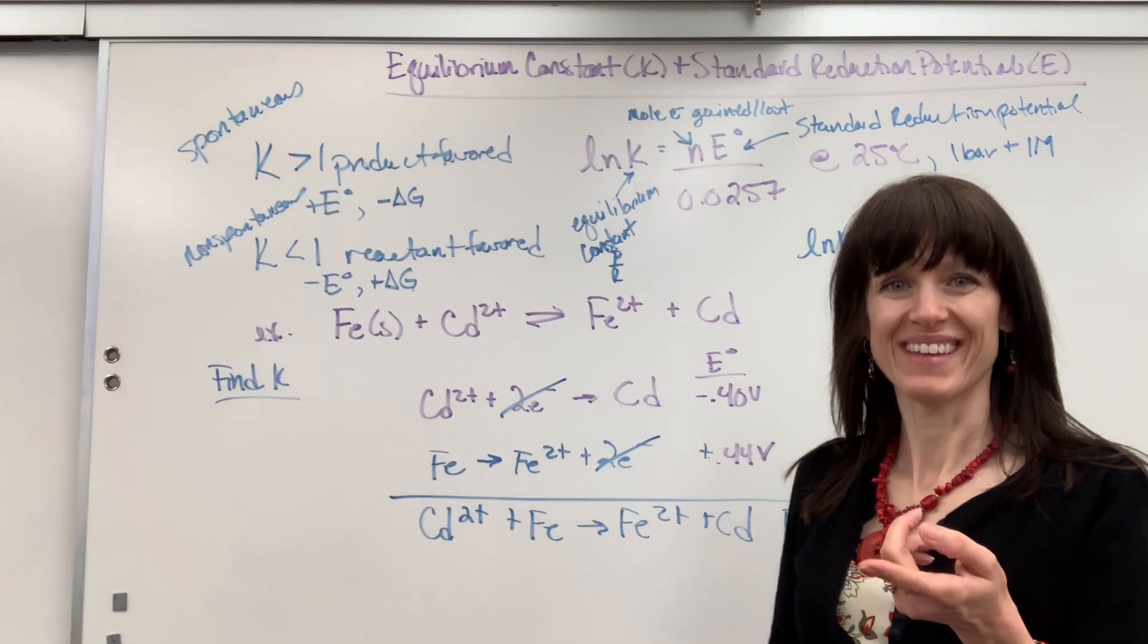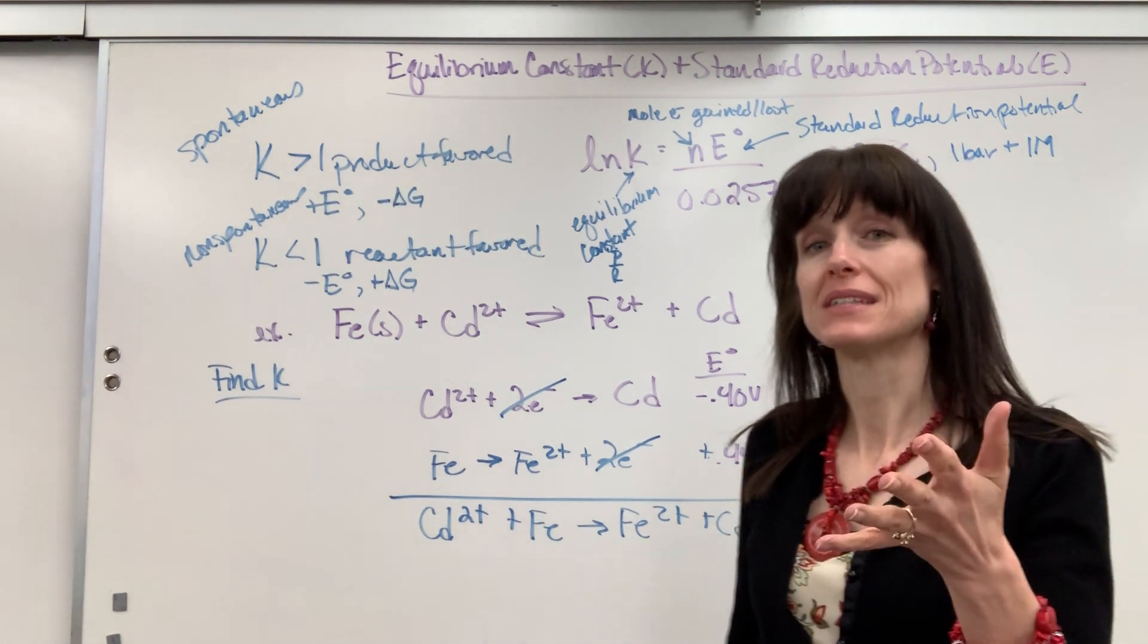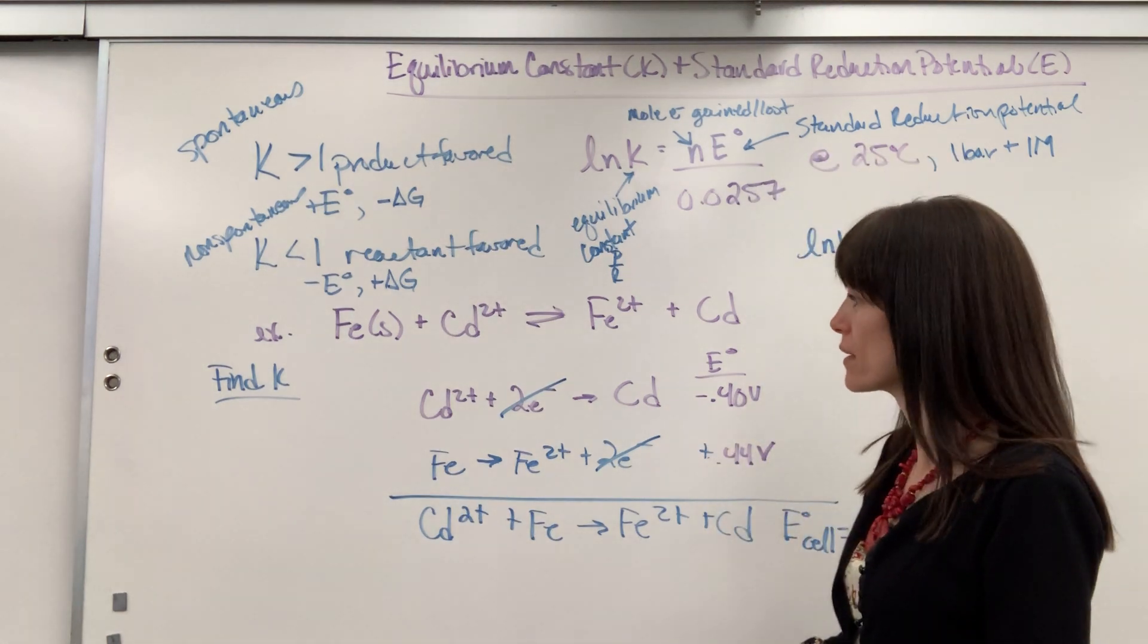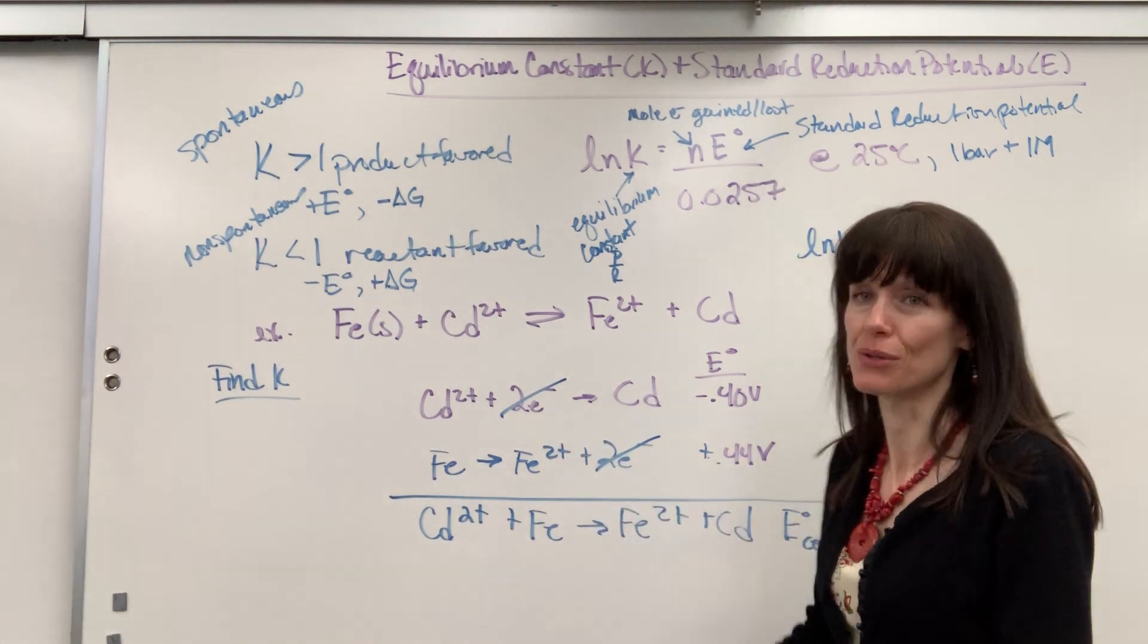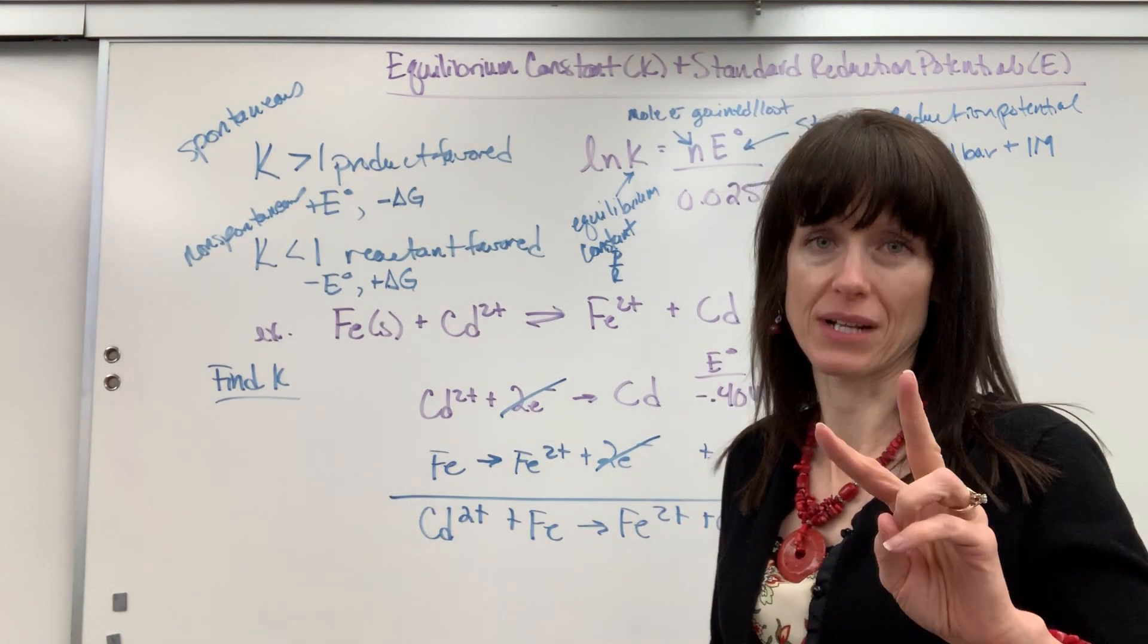Now I can plug into this formula. We're going to have natural log of K equals nE° divided by 0.0257. What's my n? How many moles of electrons were transferred? Two. Here's a mistake students will make. Sometimes they'll say four. Like, oh, well, you lost two and you gained two. Those are the same two electrons.